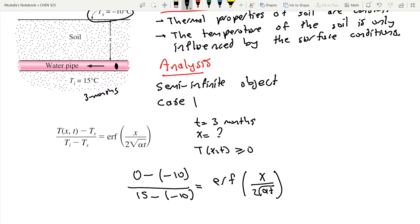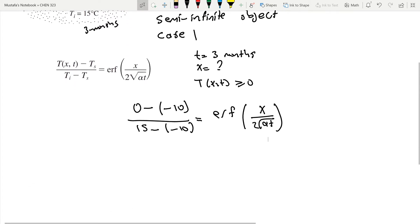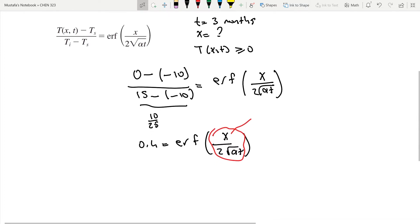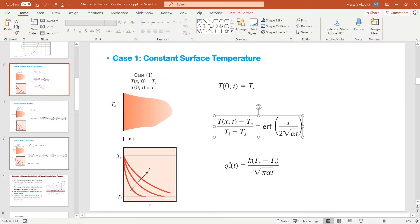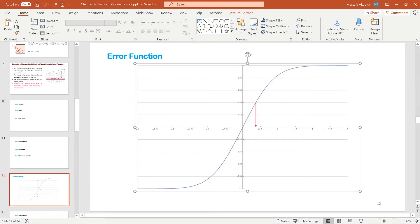So if I carry out this algebra here, I obtain 10 over 25, which is equal to 0.4, is equal to error function X over 2 alpha T. So now I'm trying to find this term.